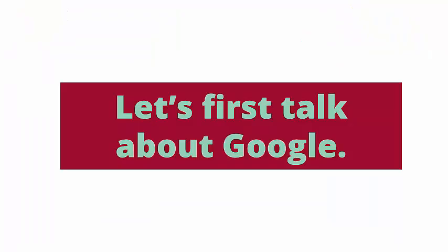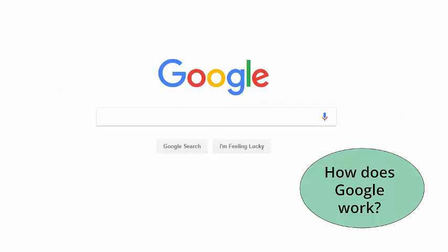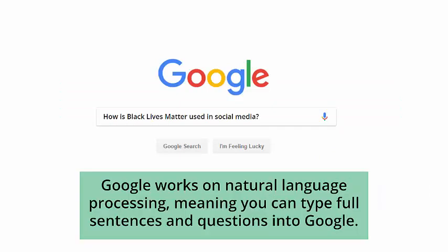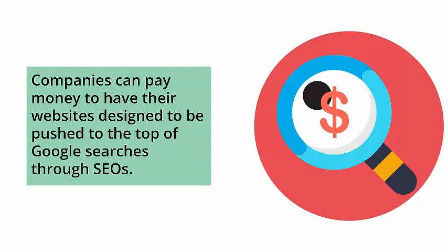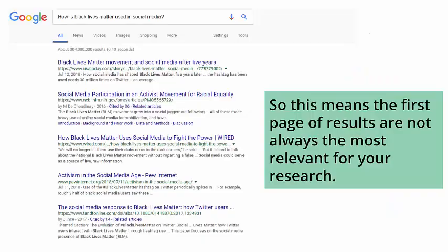Let's first talk about Google. How does Google work? Google works on natural language processing, meaning you can type full sentences and questions into Google. Google also uses search engine optimization, or SEOs, which is the way the internet searches by algorithms. Companies can pay money to have their websites designed to be pushed to the top of Google searches through SEOs. So this means the first page of results are not always the most relevant for your research or for an assignment.